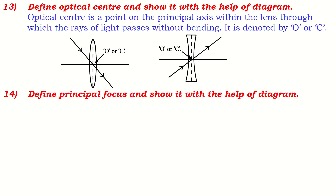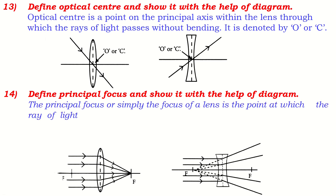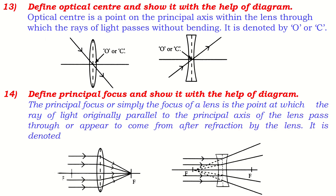Define principal focus and show it with a diagram. In the case of a convex lens, rays of light coming parallel to the principal axis after refraction meet at the focus. But in the case of a concave lens, rays of light parallel to the principal axis appear to diverge from a point — that point is the focus. The principal focus of a lens is the point at which rays originally parallel to the principal axis pass through, or appear to come from, after refraction. It is denoted by capital F.